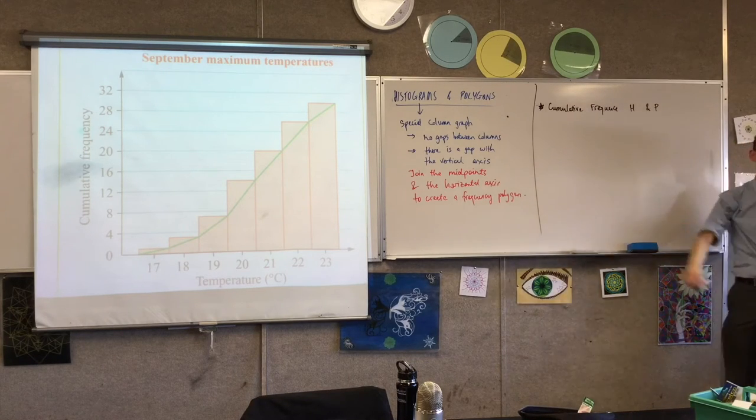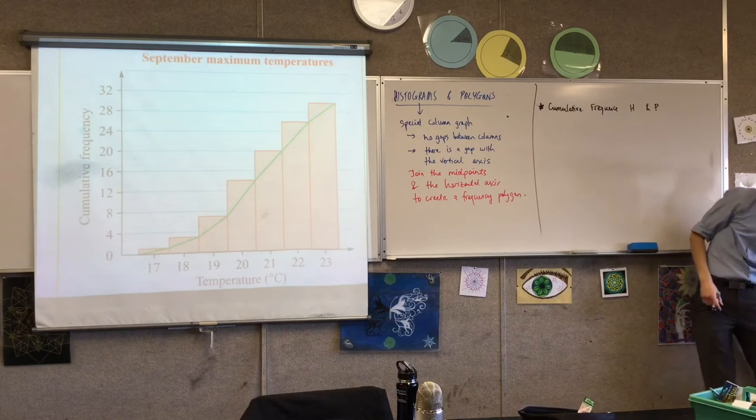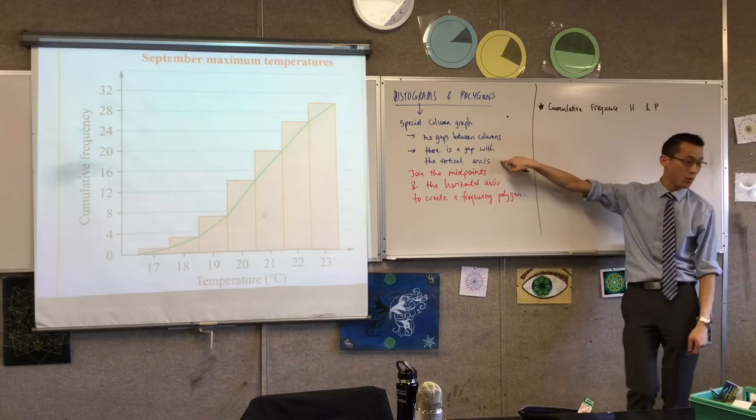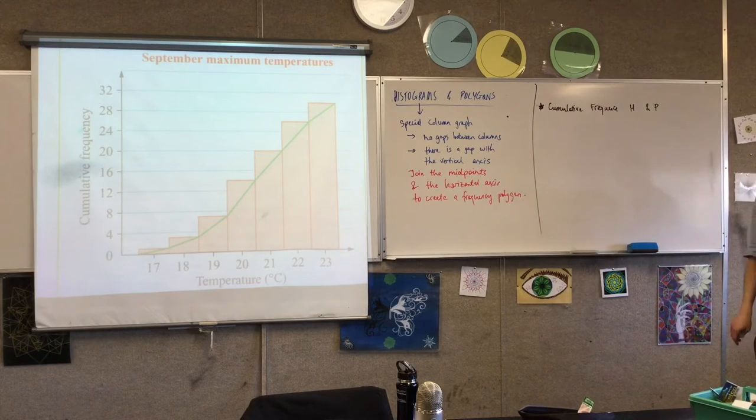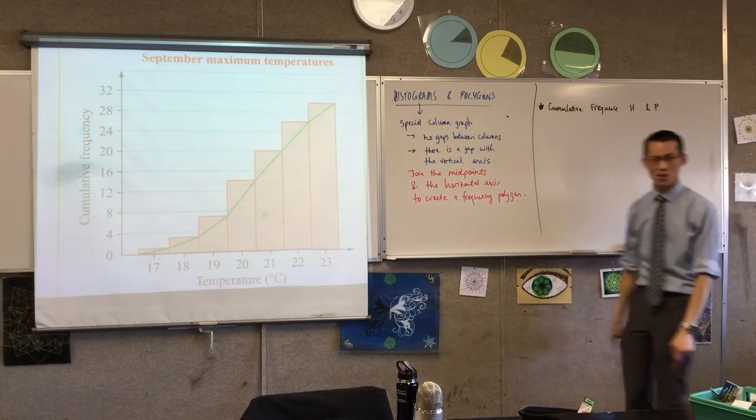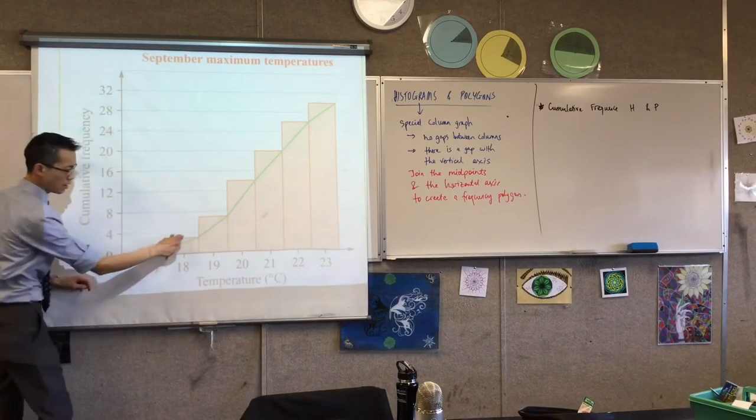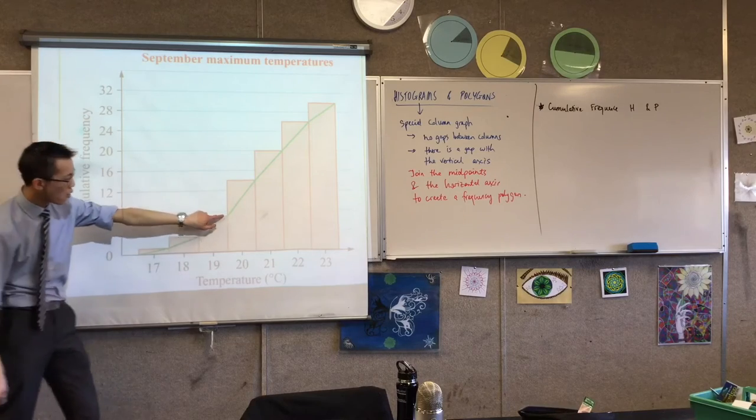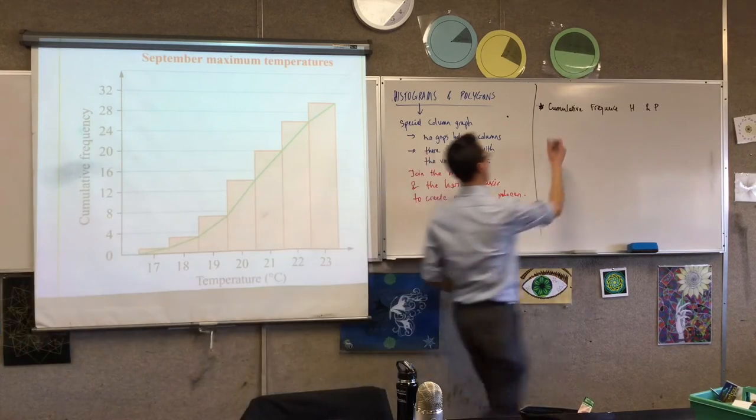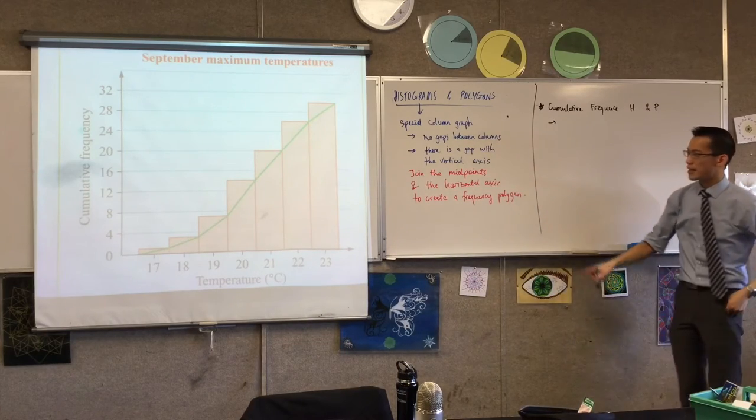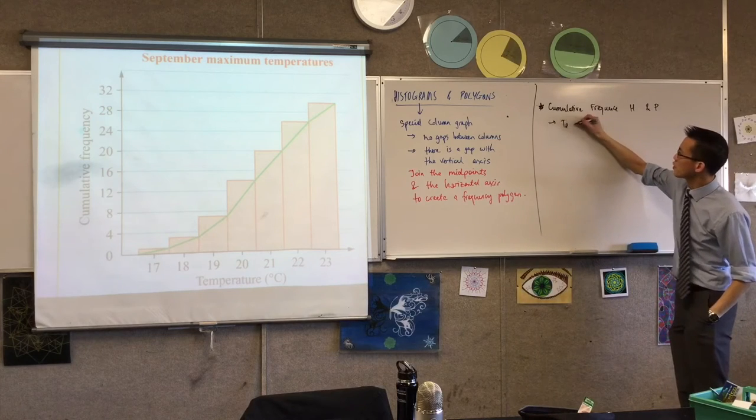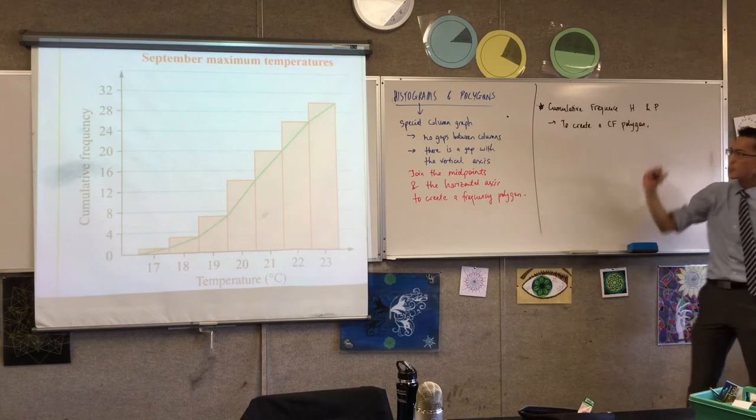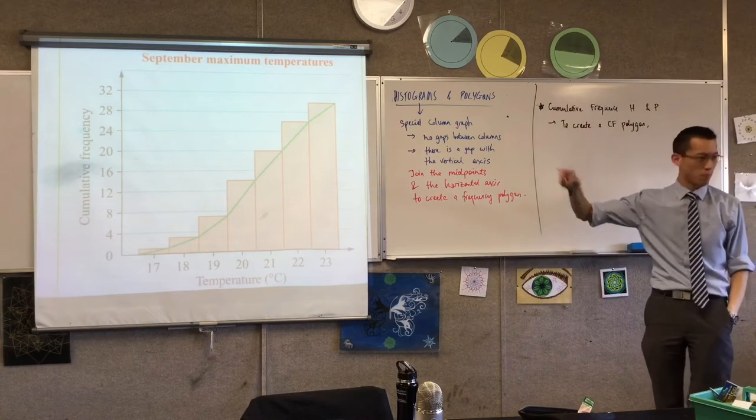So now underneath here, this is just a regular frequency histogram and polygon. I've run out of space here, but if you can make a little subheading for me, which is not frequency but cumulative frequency histograms and polygons. You've got some minor differences here. So let's look at what's common first. You've still got columns which don't have gaps. You still have a gap with the vertical axis. But what's different? Have a look at my polygon and see where it joins. I'm not at the midpoints anymore. I'm not here, here, here, here and so on. I'm at the corners. The way I describe it is I'm joining the top right corner of every column. So I've still got these features here, but to make a cumulative frequency polygon, to create a cumulative frequency polygon, instead of joining the midpoints, I'm going to join the top right corners of each column.